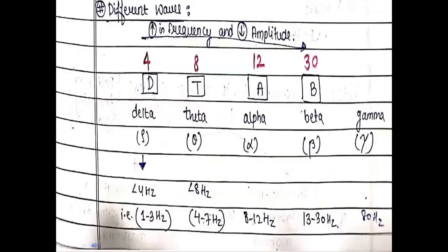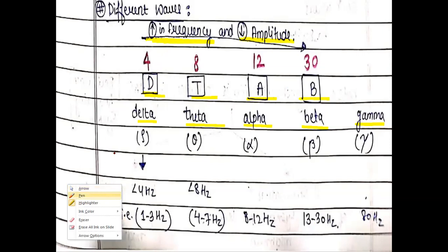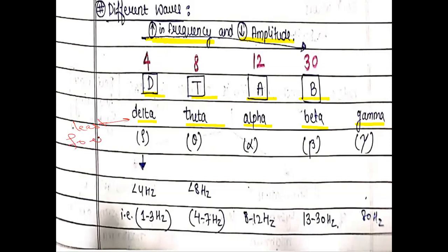Now let's look at the different waveforms. We can remember them as D-T-A-B: delta, theta, alpha, and beta — plus gamma. When we move from delta wave to gamma wave, the amplitude decreases and the frequency increases. The wave with the least frequency and maximum amplitude is the delta wave, while gamma waves have the least amplitude but the highest frequency.